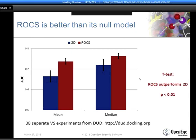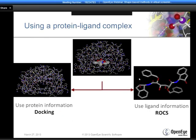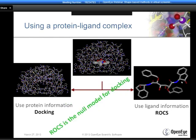Taking it a step further, we look at docking—a very common virtual screening method—typically performed into a protein-ligand complex. In most docking experiments, you remove the ligand and dock into the binding site, asking what fits the shape and chemical feature distribution of the binding site. In ROCS, we take the same protein-ligand complex, discard the protein, and ask what matches the shape and chemical feature distribution of the ligand—assuming the protein likes that shape. In that sense, ROCS is the null model for docking: we don't use the protein, we simply use the ligand from the complex. Keep that in mind as I discuss results comparing various virtual screening techniques.